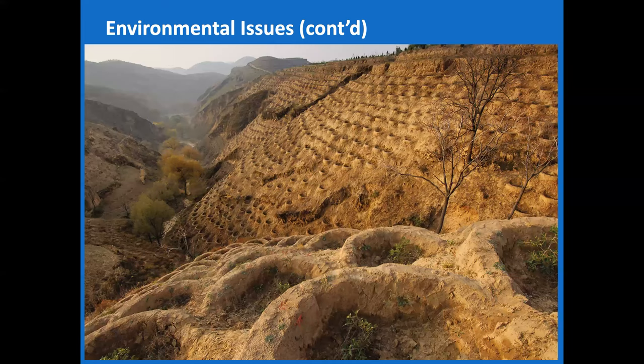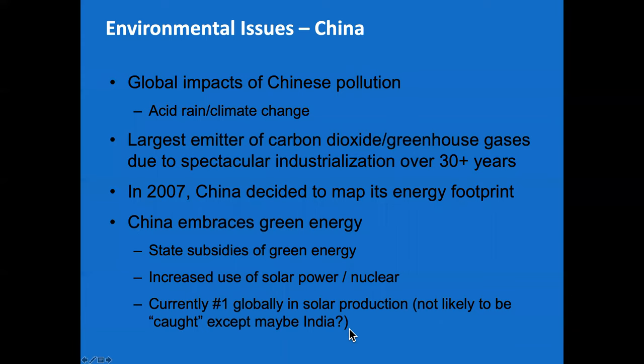This is what clever humans can do when the terrain isn't good — you adapt by shaping that terrain to suit your needs, flooding these little terraced cups to grow rice. Other environmental issues include acid rain and climate change, which are the biggest pollution exports tied to China, and China has a lot of pollution.